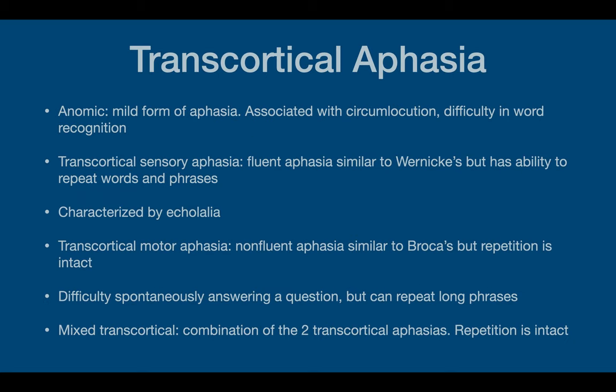There are several types of transcortical aphasia. The anomic type is a mild form — not necessarily debilitating. It's associated with circumlocution, where a person searches for the word. They have difficulty in word recognition and are more likely to describe things in a vague way instead of actually pulling the word from memory.